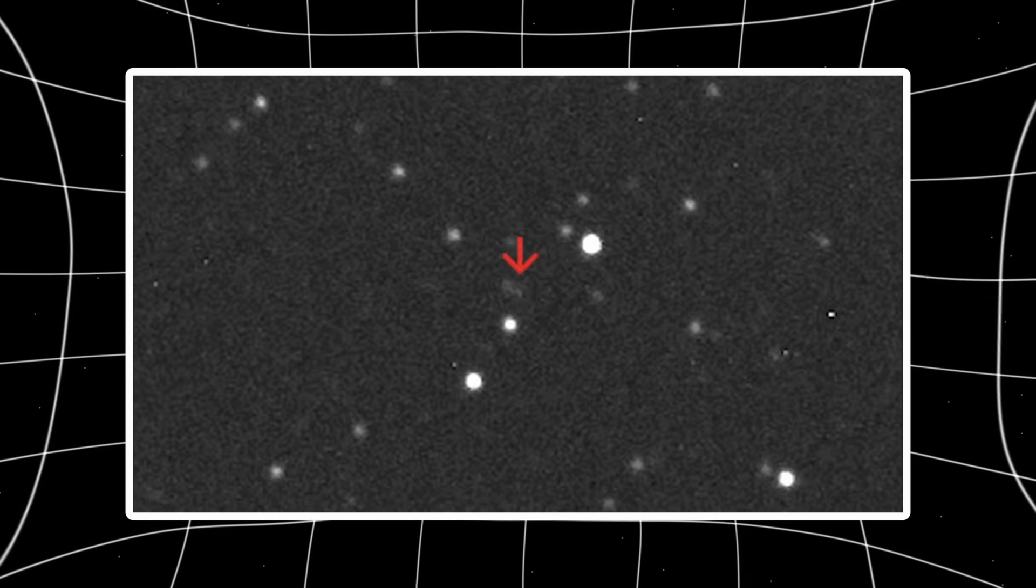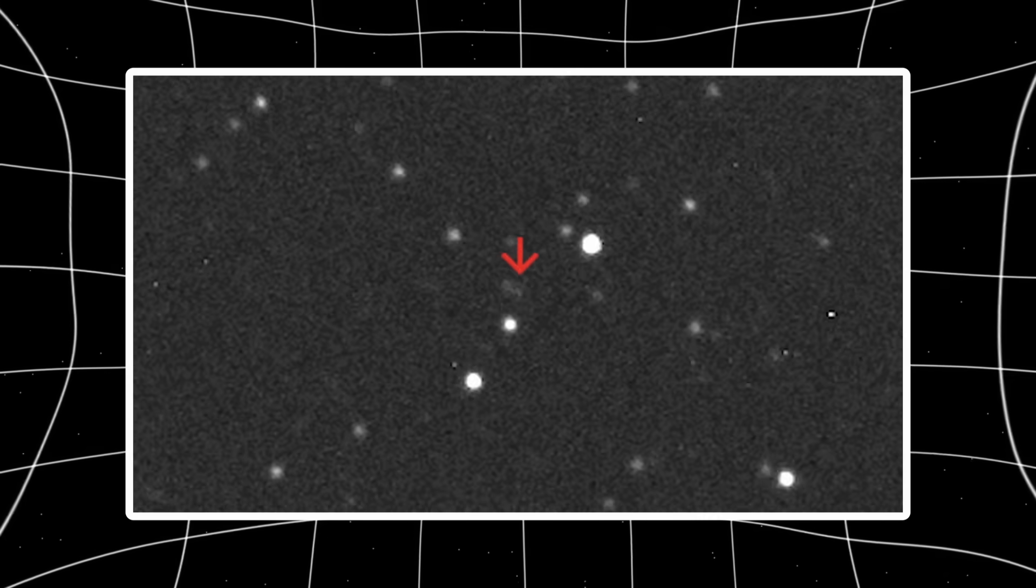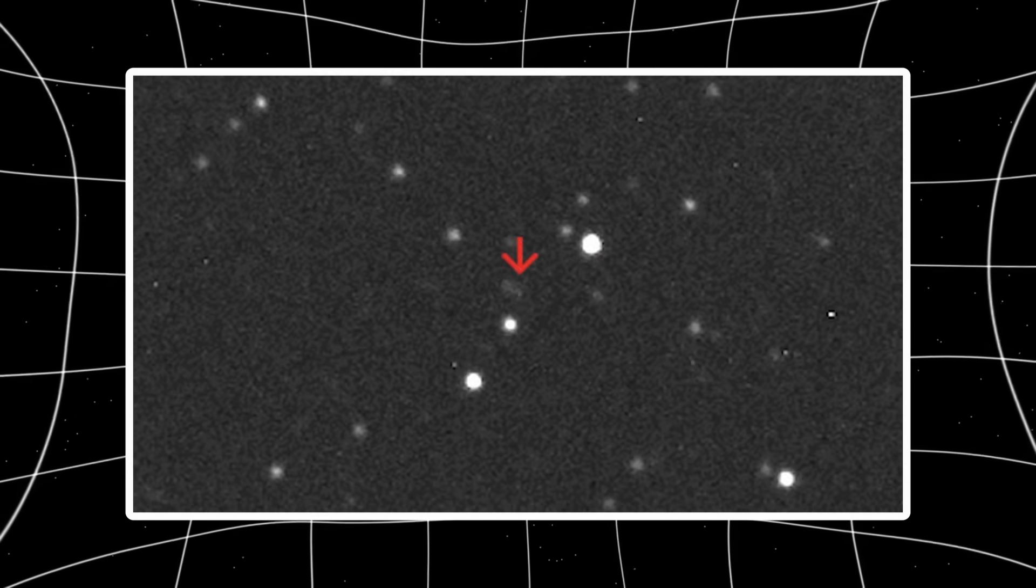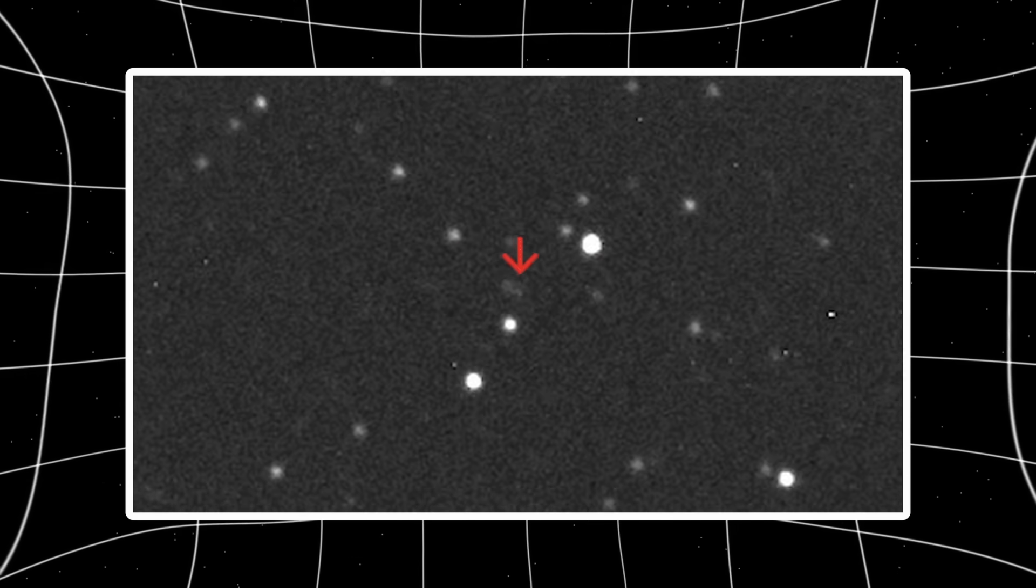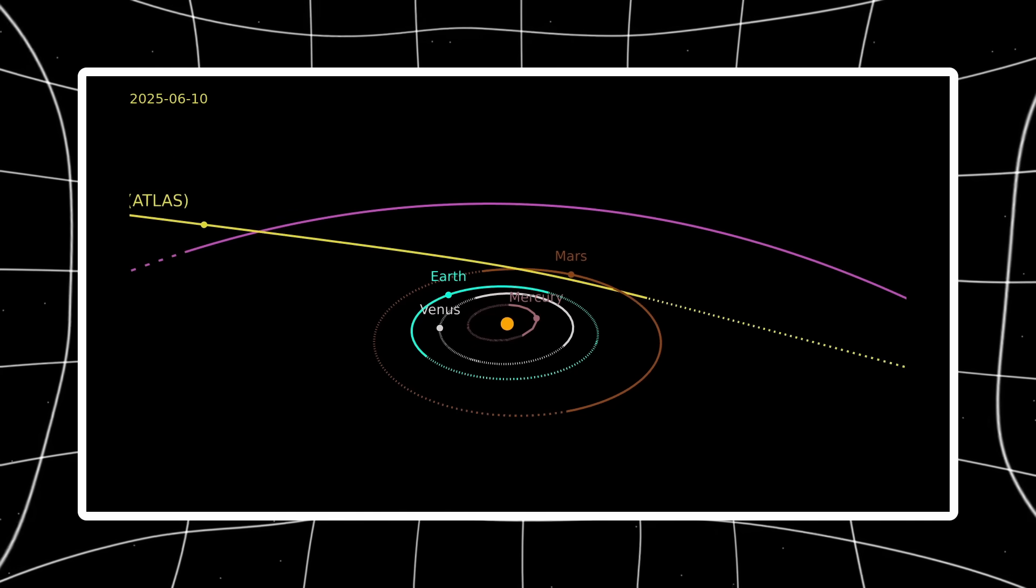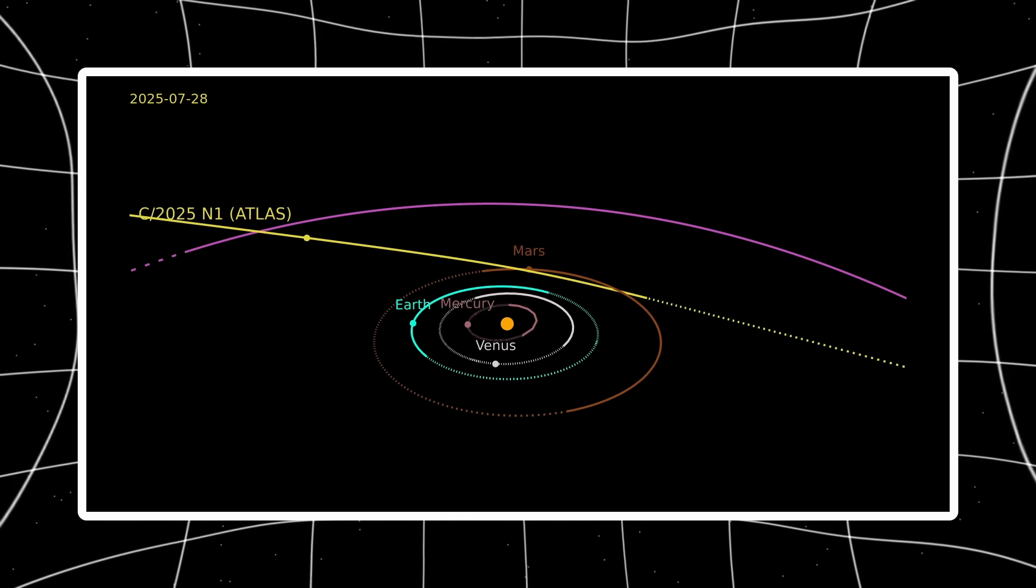When 3i Atlas first appeared moving in from deep interstellar space, it followed a normal hyperbolic trajectory. Speed, direction, orbital shape, everything matched expectations for a visitor not born in our solar system. Researchers cataloged it as another rare traveler passing through without surprises. Then it got closer to the sun. And the behavior changed.